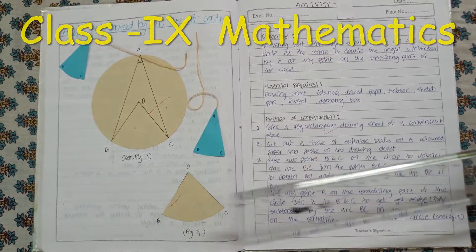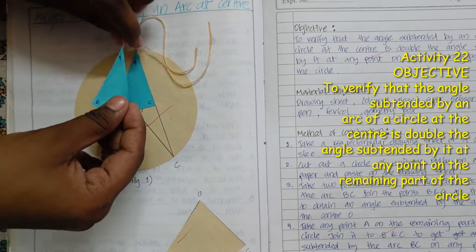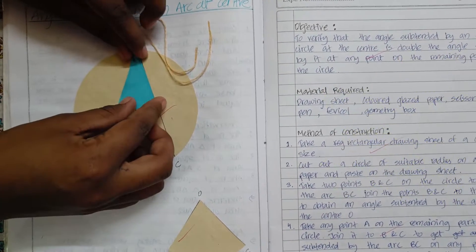As you can see in figure 1, here we take two angles, angle BAC and angle BAC which are congruent.